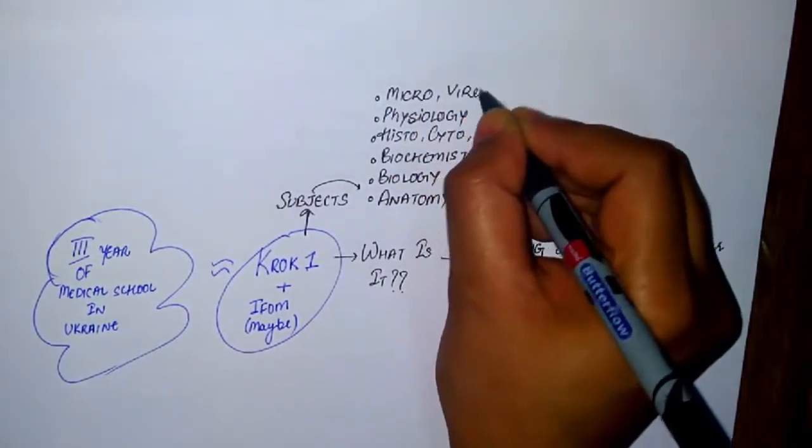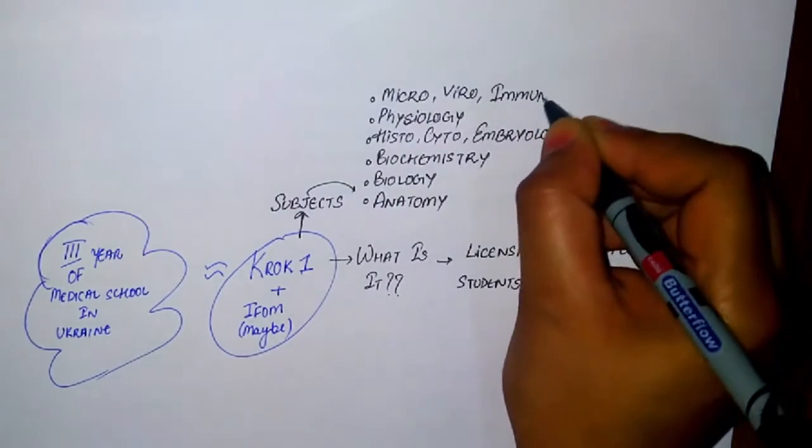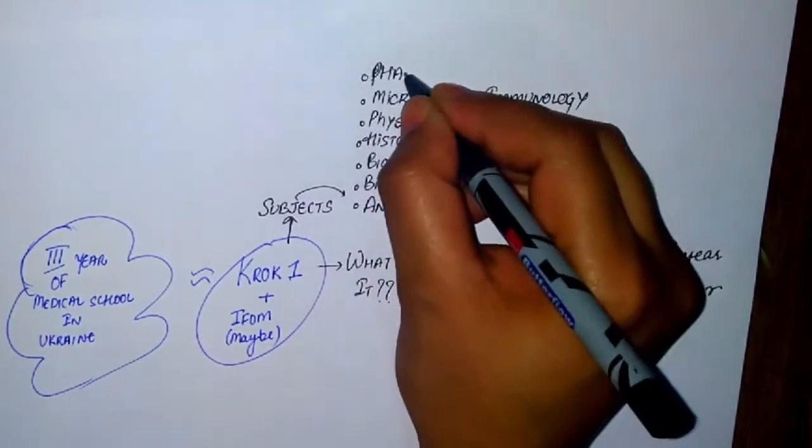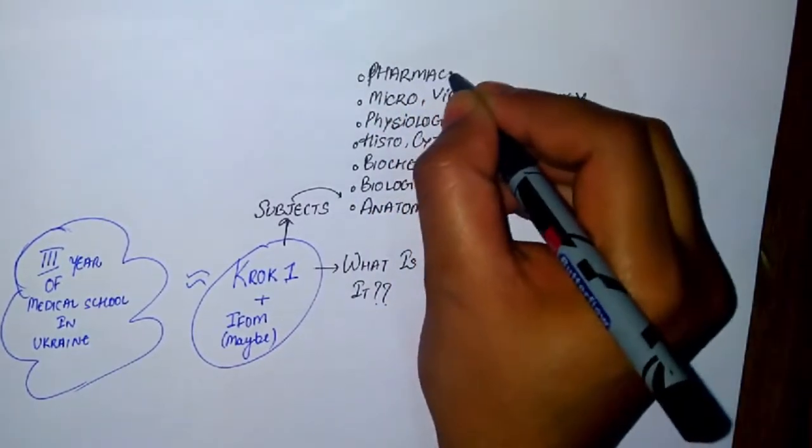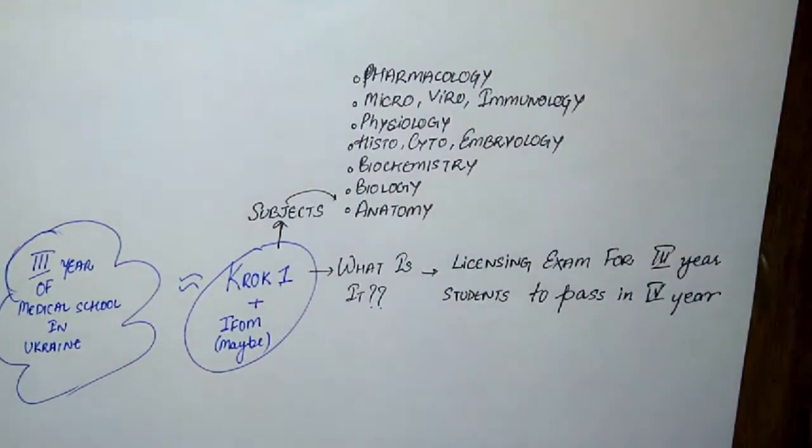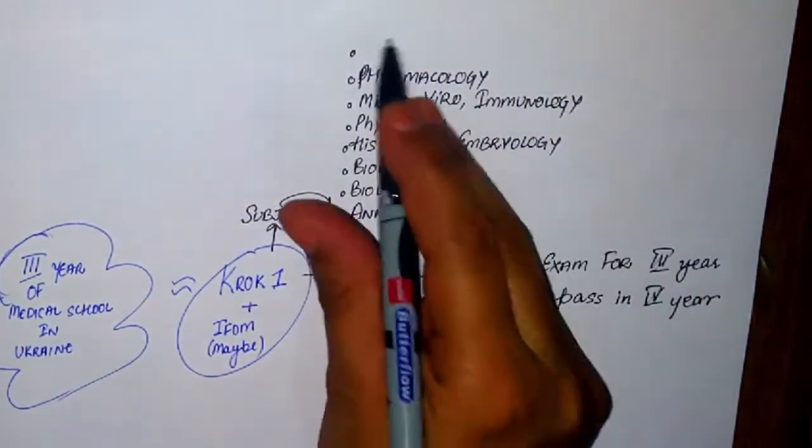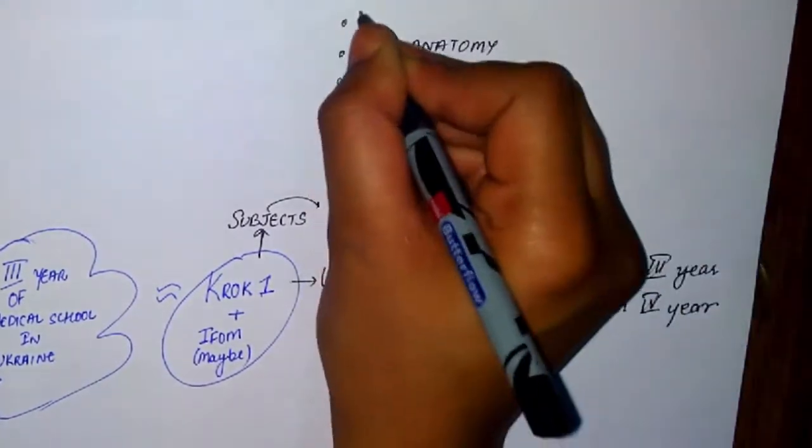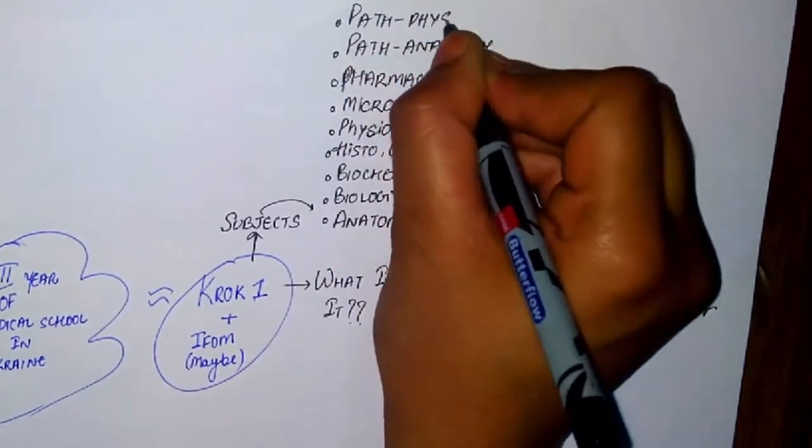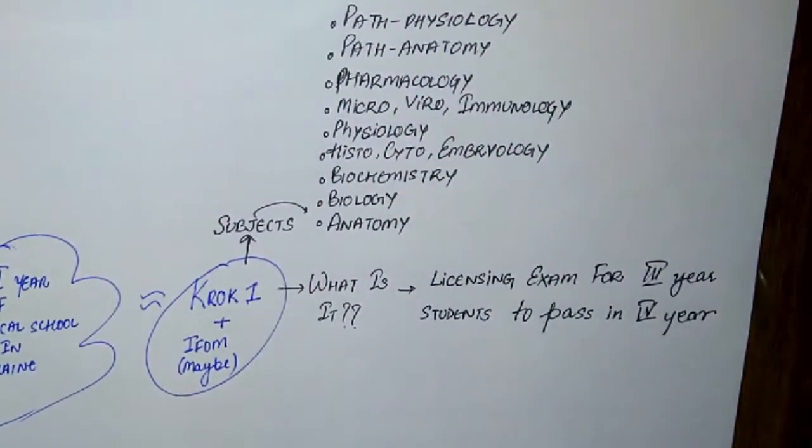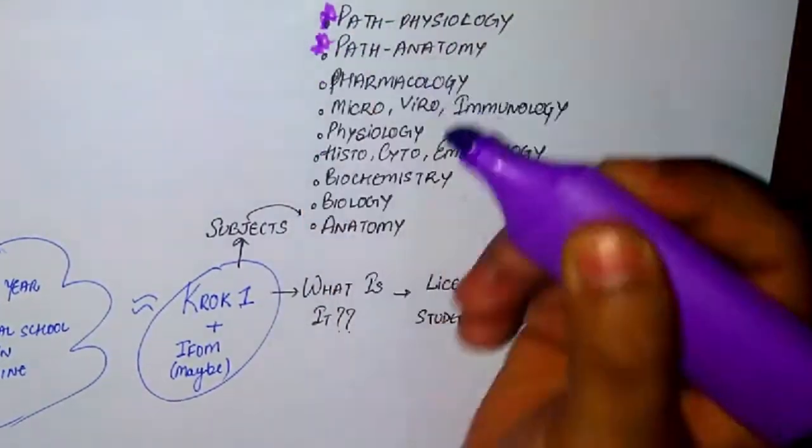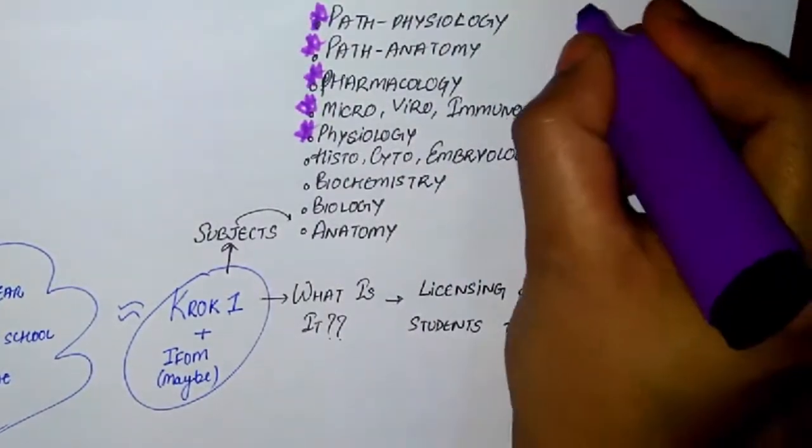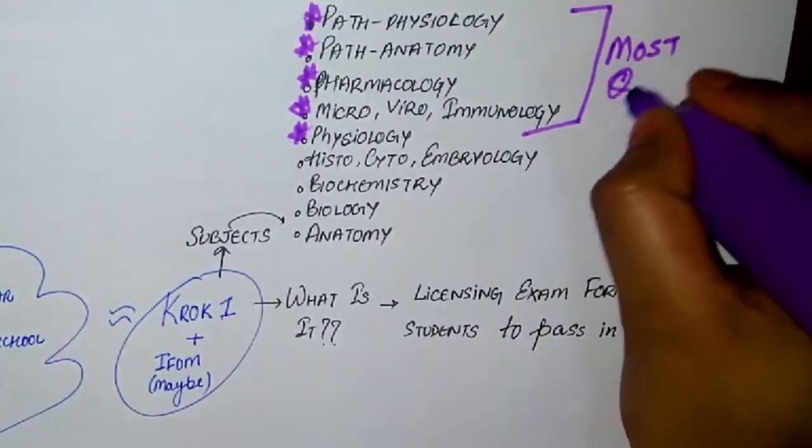The subjects are anatomy, biology, biochemistry, histology, cytology and embryology together, physiology, microbiology, virology and immunology all together, and pharmacology. Subjects from third year are microbiology, virology, immunology, pharmacology, path anatomy, and path physiology. Most questions come from path physiology, path anatomy, pharmacology, microbiology, immunology, and physiology.